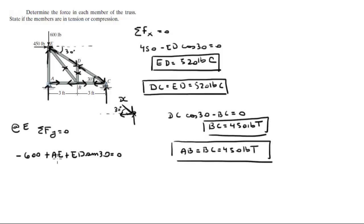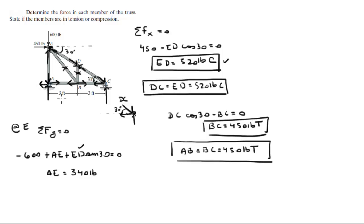Now, if AE comes out negative in this equation when we solve for it, then you know it is going down. So when you solve for AE by plugging in ED, which we already found, you are going to get that AE is equal to positive 340 pounds. So this was right — it was going up, which means this is going down, which means this is going to the left. And AE is in compression.